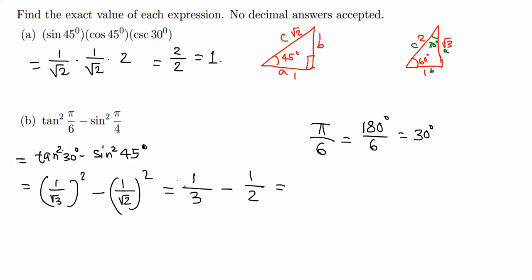Multiply this by 2 over 2, multiply this by 3 over 3, so that 6 is the common denominator. 2 minus 3, negative 1, so negative 1 over 6. And we always put the negative in the front: negative 1 over 6 final answer.